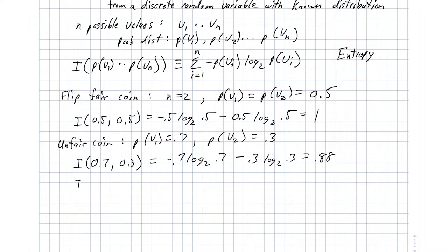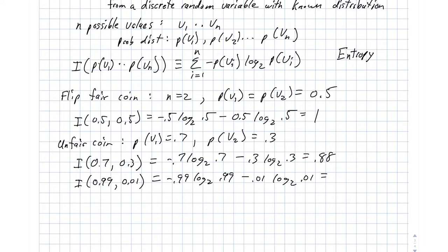Let's go to the more extreme case: p(v₁) = 0.99 and p(v₂) = 0.01. The information content is on the order of 0.08. In this case, the coin is going to turn up heads most of the time and only occasionally tails, so I need a very small number of bits on average to communicate the result of the coin flip.